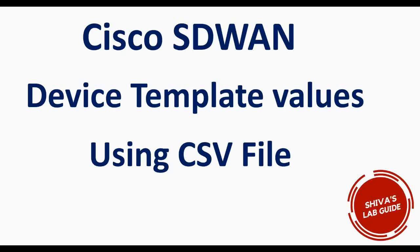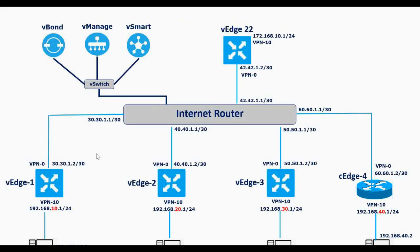In this video, I'm going to show you how to enter device template values using a CSV file. In my previous videos, I showed you how when attaching a device template to the vEdges, we enter the VPN interface IP addresses and next-hop IP addresses manually. In this video, I'll show you how to do that using a CSV file.